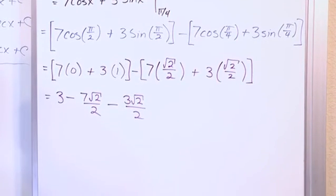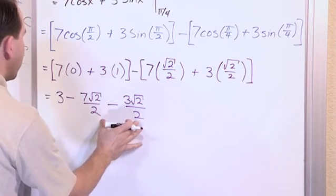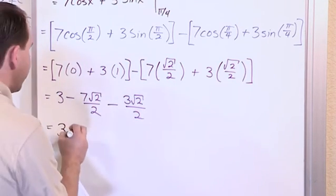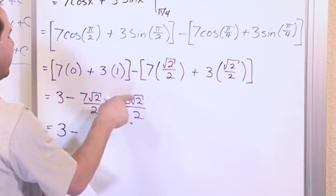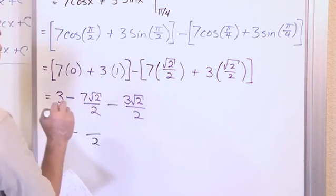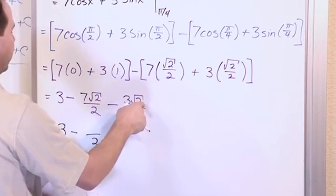Let me switch colors here. Now what you really have here, you have a common denominator already. 3, and then you have minus 7 minus 3 more, because these are all common terms here. You have a common denominator of 2, so that's going to stay on the bottom. On the top, you have 7√2. Here you have 3√2.